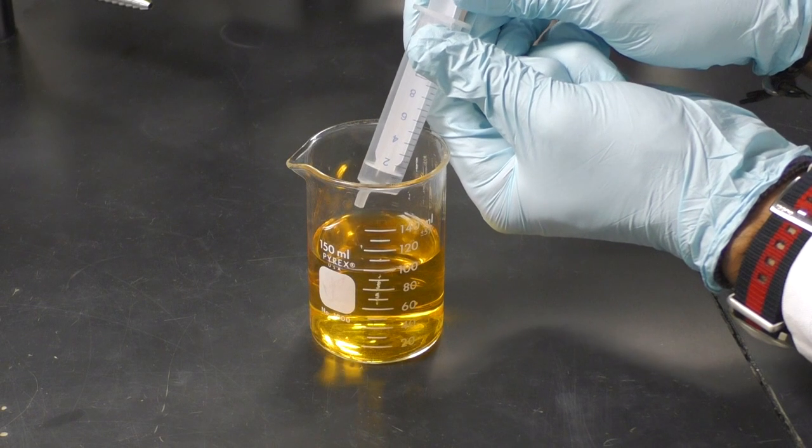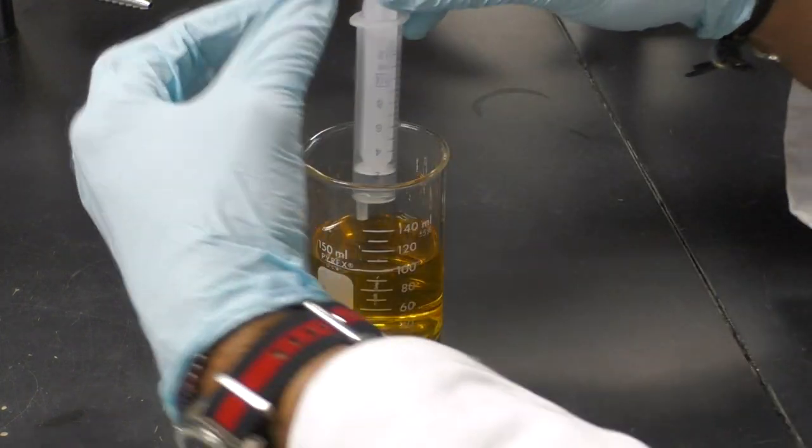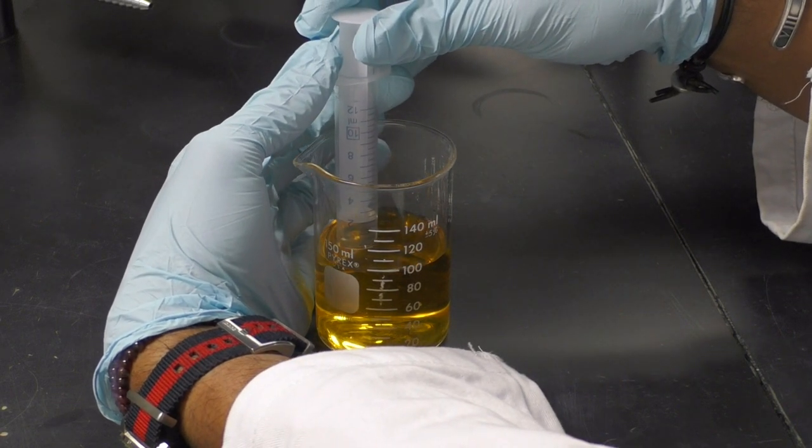Now let's move on to how a syringe filter works. First, draw up about 3-4ml of air into the syringe. Then place the tip of your syringe into the solution so that it is fully submerged.